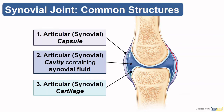There are three features that all synovial joints have in common. The first is the capsule, which binds the two bones together and also surrounds the space in here — the articular cavity — which contains a little bit of synovial fluid. The final part is the articular cartilage covering the articular surfaces of bones.